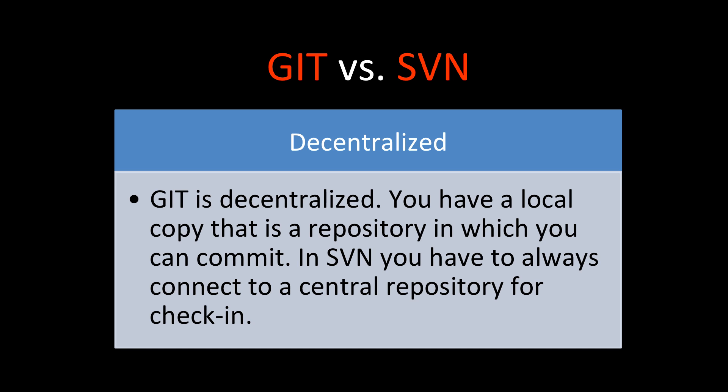In Git, you can have a local copy which is a repository in which you can commit. On your own desktop, you can create a local copy of a repository and keep committing if you have Git installed, and later merge it with the remote repository. Whereas in SVN, you always have to connect to a central repository to check in code — if you are not connected, you cannot check in.